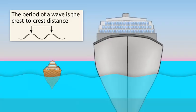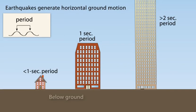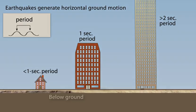Now, let's look at how buildings are affected by earthquake induced seismic waves. All buildings have a natural period, or resonance, which is the number of seconds it takes for the building to naturally vibrate back and forth.